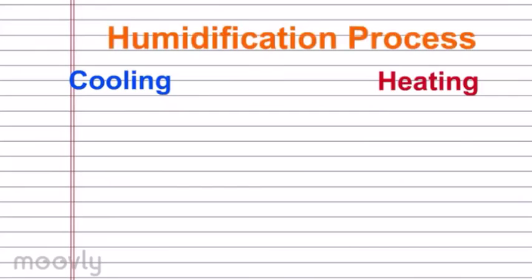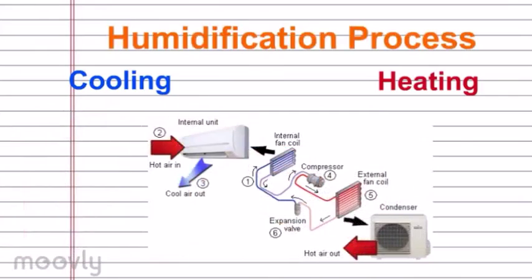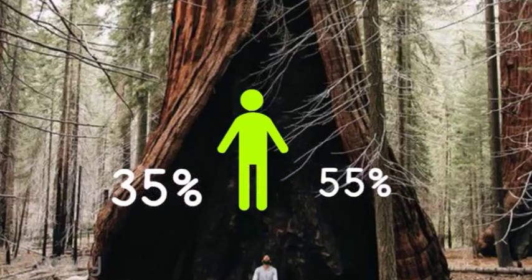Humidification process along with cooling or heating is used in a number of air conditioning applications. Studies indicate people are generally most comfortable when relative humidity is maintained between 35% and 55%.